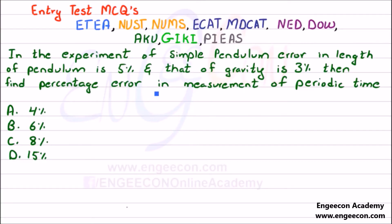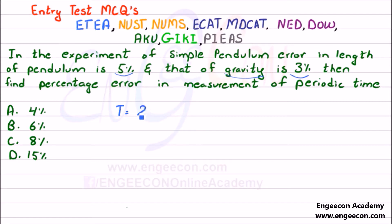Here we have entry test MCQs relevant to entrance examinations. In the experiment of a simple pendulum, the error in the length of the pendulum is 5% and that of gravity is 3%. Find the percentage error in the measurement of the periodic time of the pendulum. The time period of the pendulum is given by T = 2π√(L/G).